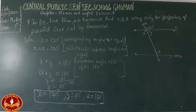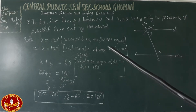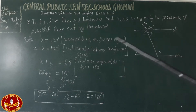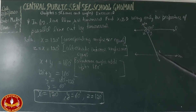Hello, seventh class, chapter five, Lines and Angles, Exercise 2. We have to find the values using two parallel lines and a transversal line. In the figure, line L is parallel to M, and N is the transversal line.